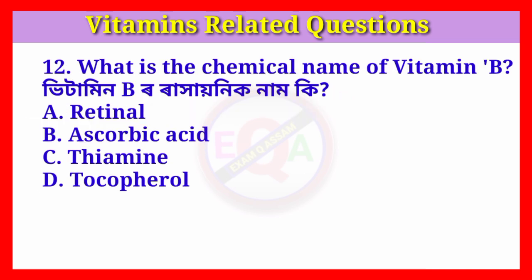Question number twelve: What is the chemical name of vitamin B? Answer: Option C, thiamine.